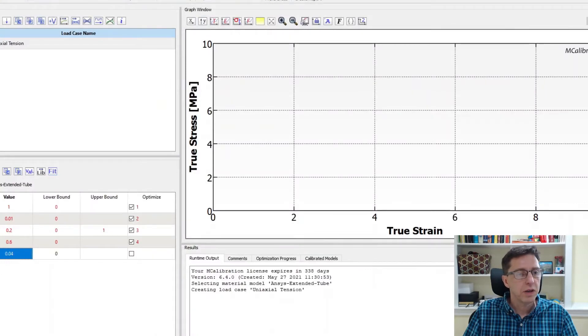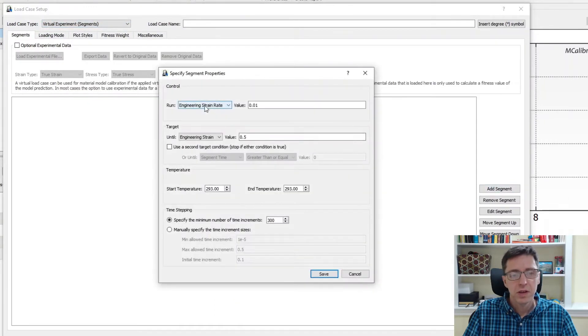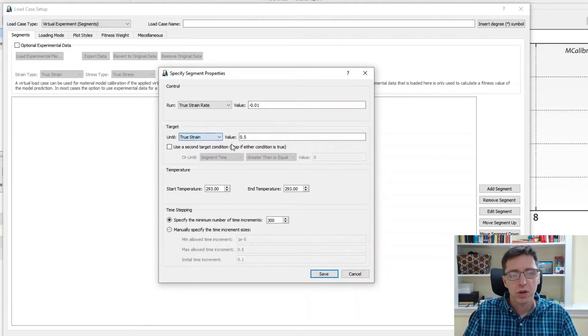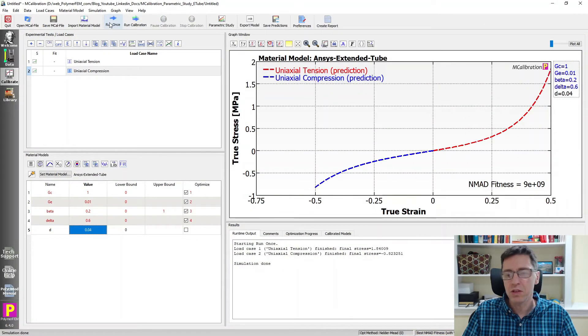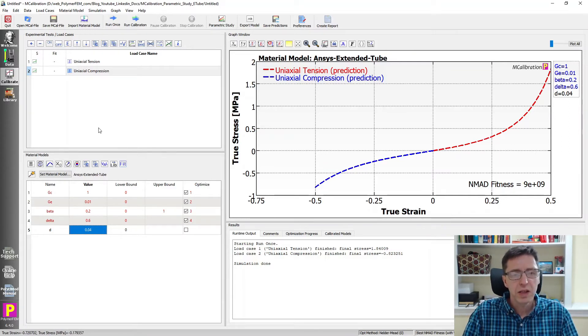Then I'm going to add another one. Virtual experiment, I'm going to do true strain rate negative this time until the true strain of minus 0.5, so 50% true strain in compression and 50% true strain in tension. Axial compression. If I run this once now, we'll see that this is what the Extended Tube Model will look like with the default parameters that mCalibration assigns to it. There's no data here. We don't know if this is accurate or not. But the point I want to show you is what do these parameters really do to the response? Are there some limitations to what they should be?